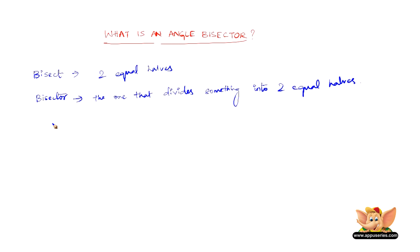Now, what is an angle bisector? An angle bisector is a bisector which divides the angle into two equal halves.